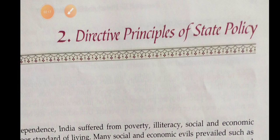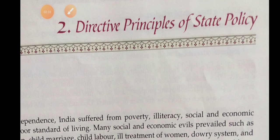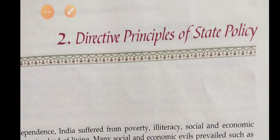In a democratic system, we select our representatives, they form a ministry, and they rule us — we choose our ministers. A welfare state is based on this democratic system of government and is responsible for the welfare and social and economic well-being of all citizens.